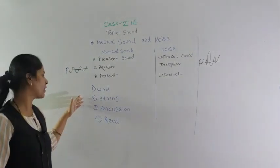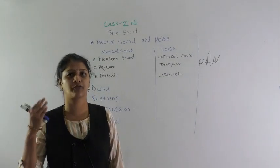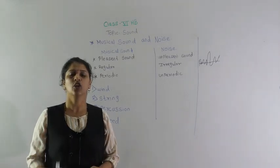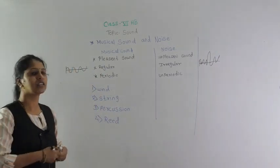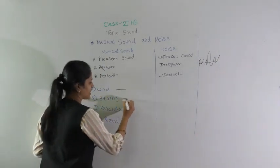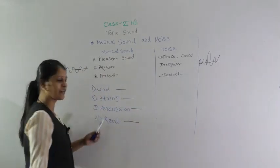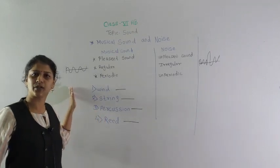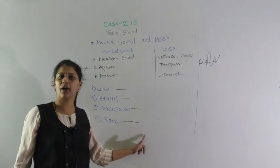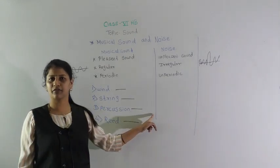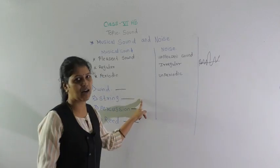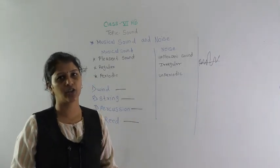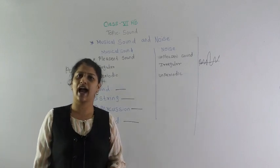We also discussed four main types of musical instruments: wind, string, percussion, and reed. Today's homework is to find two or three examples for each type of instrument. Examples given: harmonium for reed, tabla for percussion, sitar and veena for string, and shehnai for wind. Write these in your notebook and also write the difference between musical sound and noise.